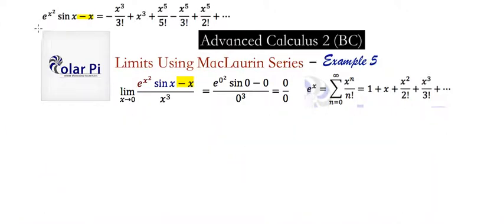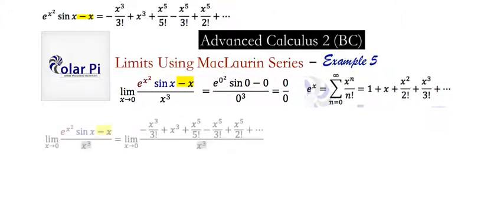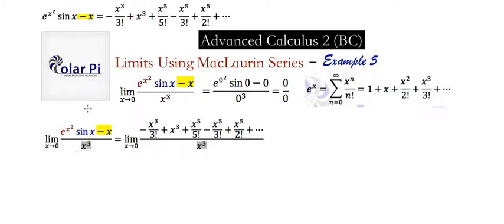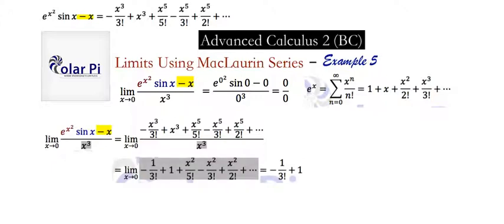Now we need to divide e to the x squared times sine x minus x by x cubed and then send the limit as x goes to zero. Dividing by x cubed means dividing each of the terms by x cubed. So we get negative x cubed over 3 factorial divided by x cubed, which is negative 1 over 3 factorial, then plus x cubed divided by x cubed, which is plus 1, then plus x to the fifth over 5 factorial divided by x cubed, which is x squared over 5 factorial, and so on.